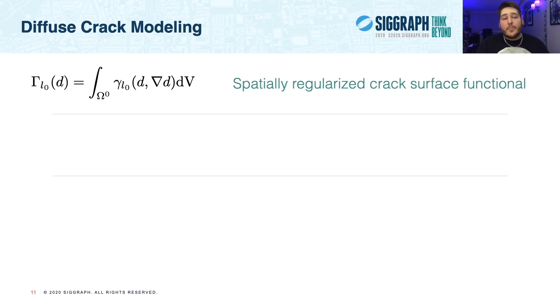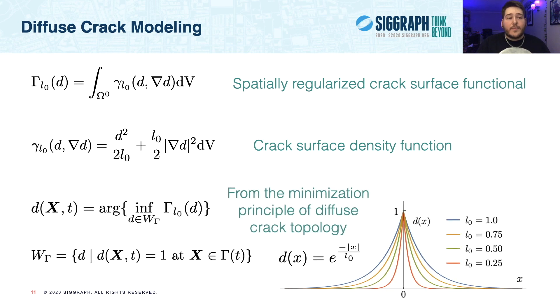For our approach to anisotropic damage, we're inspired by the geometric approach to diffuse crack modeling. We begin with a spatially regularized crack surface functional, seen at the top, where L0 is the length scale parameter used to regularize the diffuse crack. And this gamma L0 expression is a crack surface density function that defines the crack density per unit volume. In the second row, we show the specific form of this crack surface density we use. And finally, the minimization principle of diffuse crack topology gives us an expression for the regularized crack phase field, seen in the third row. Below that, you can see that W gamma is a constraining Dirichlet condition that ensures damage is maximized at the crack surface.